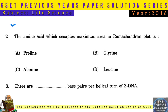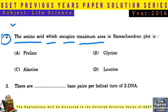Question No. 2: The amino acid which occupies maximum area in the Ramachandran plot is Glycine.